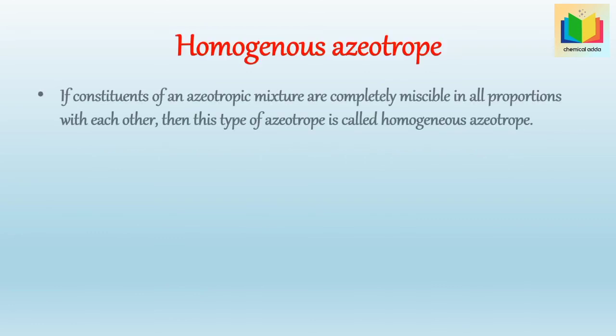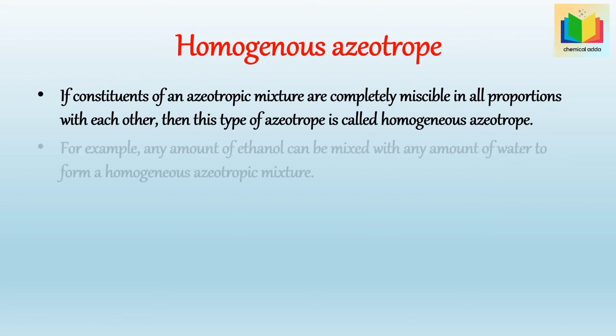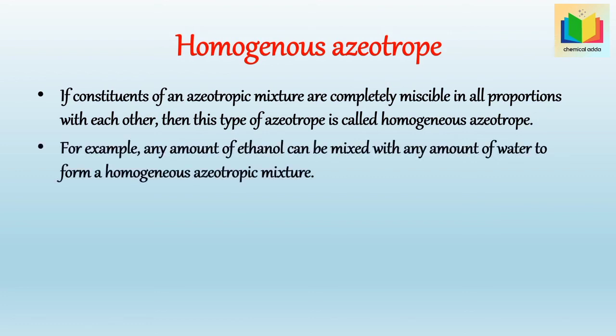What is the homogeneous azeotrope? If the constituents of an azeotropic mixture are completely miscible in all proportions with each other, then this type of azeotrope is called a homogeneous azeotrope. For example, any amount of ethanol can be mixed with any amount of water to form a homogeneous azeotropic mixture.